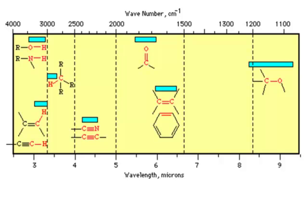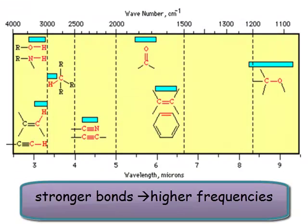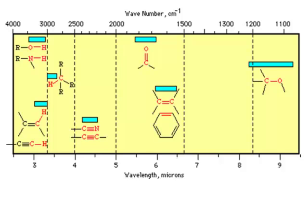There are other very characteristic vibrations. C triple bond N and C triple bond C both absorb around about the 2000 and a few hundred wave number region of the spectrum. That's because they're strong bonds, they're triple bonds, so they're going to have very high frequencies. It turns out that the C triple bond N is a very intense absorption, while the C triple bond C is actually a very weak absorption. That's associated with the size of the dipole moment change.